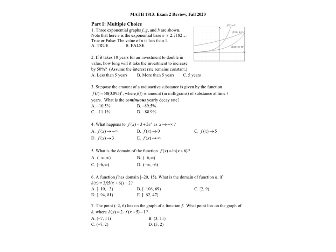The first part is multiple choice, and we're looking at graphs of F, G, and H. The question says true or false: the value of N is less than 1. N is the initial value of my function H of X — in other words, that's the value of H when X is 0. So H of 0 equals N times M to the 0, and M to the 0 is 1, so H of 0 is N. That point is above the X axis, right here at this tick mark.